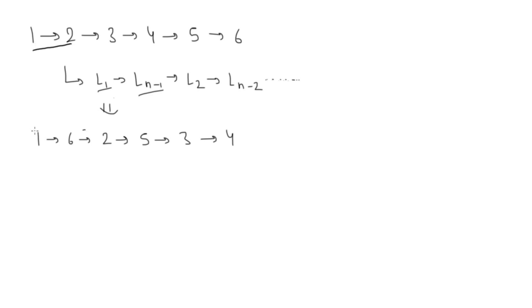So given a linked list, I need to convert it into this alternating first-last pattern. We'll cover this one by one: first the logic, then the Java code implementation, and finally the time complexity of this problem.